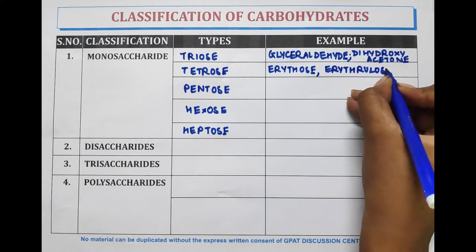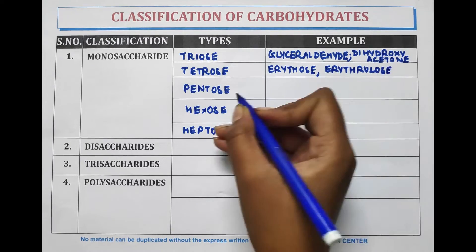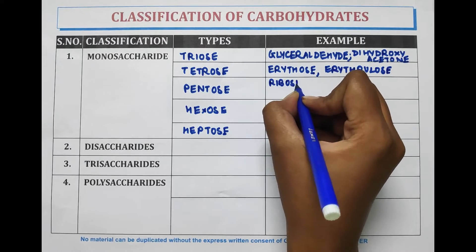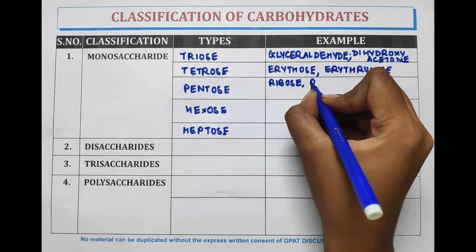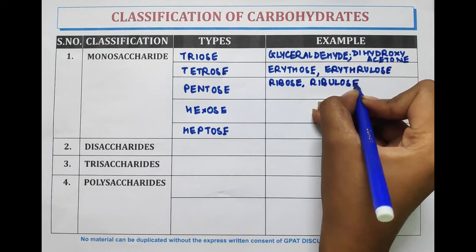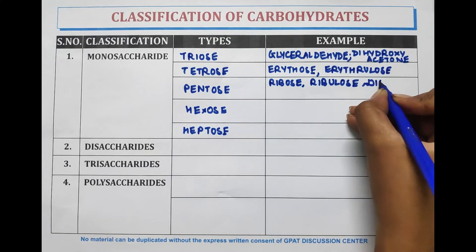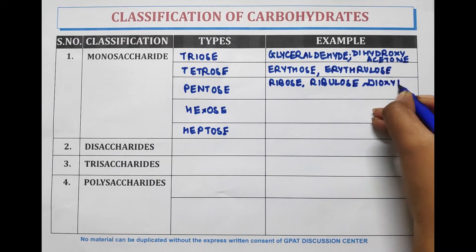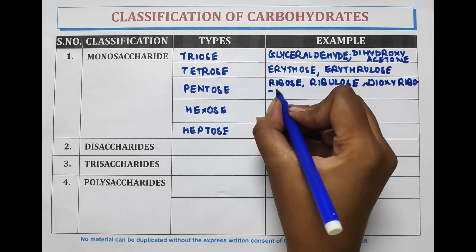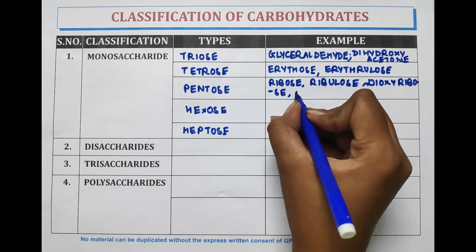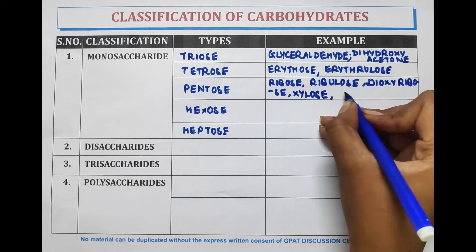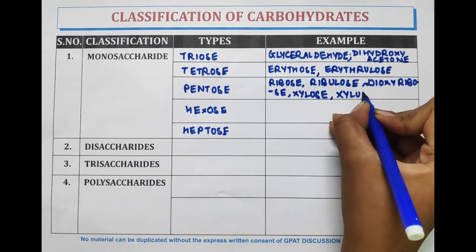Examples of pentose are ribose, ribulose, deoxyribose, xylose, and xylulose.